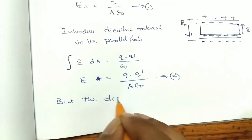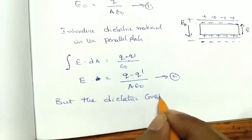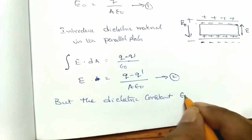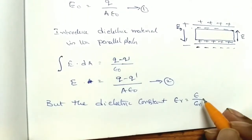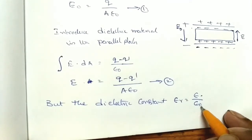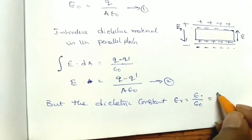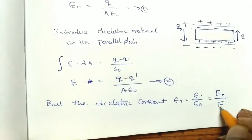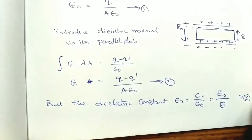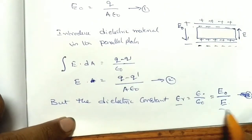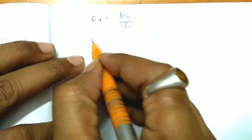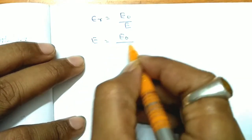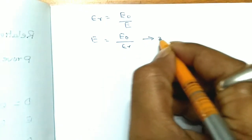The dielectric constant epsilon r is equal to epsilon by epsilon naught — that is, the ratio of the permittivity of the medium to the permittivity of free space. This can also be written as E naught by E. So E equals E naught by epsilon r. This is equation number 3.